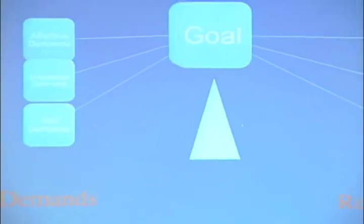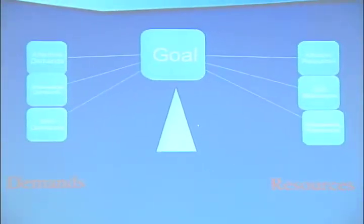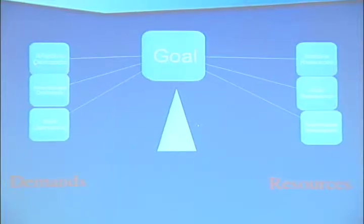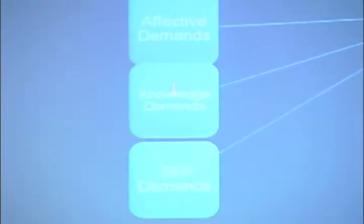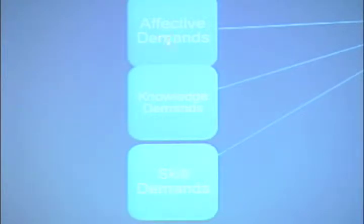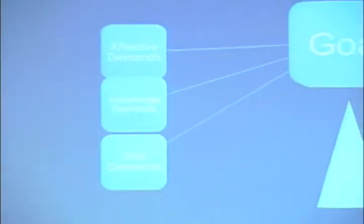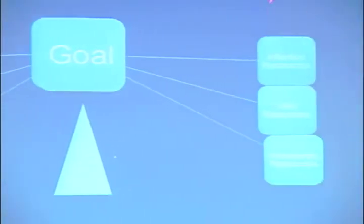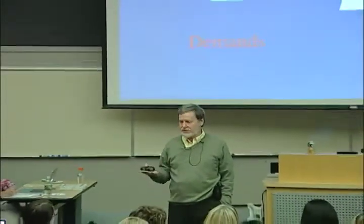The issue is engagement — how do we engage kids and get them to have the same goal as we do. There are three things to look at: the affective demands of the goal, the knowledge demands, and the skill demands. The key thing is that kids are going to match the demands with their resources — they will predict whether they have the resources to reach that goal.